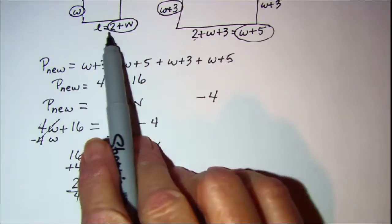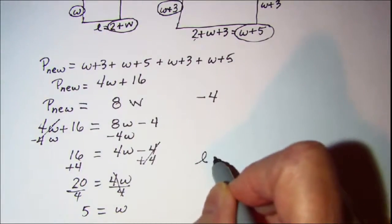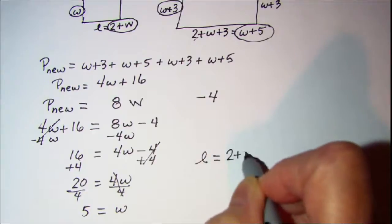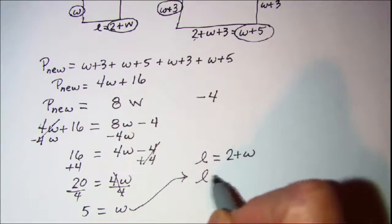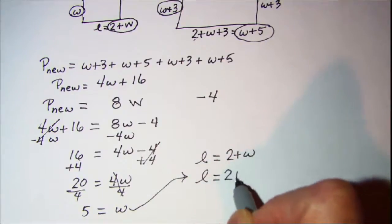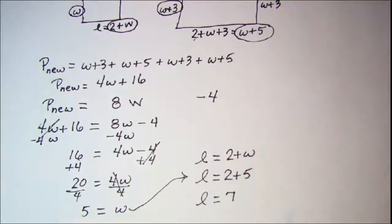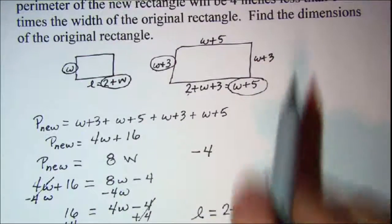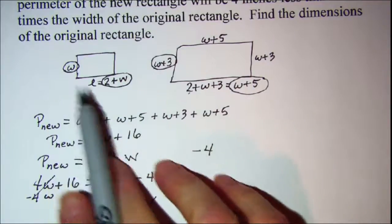Now from this little equation right here, I know that my length is 2 more than the width. So length equals 2 plus W. I can put that in there and get a length which is 2 plus 5. My length is 7. So the problem asks us to find the dimensions of the original rectangle, which was W and L. So my dimensions are 5 inches by 7 inches.